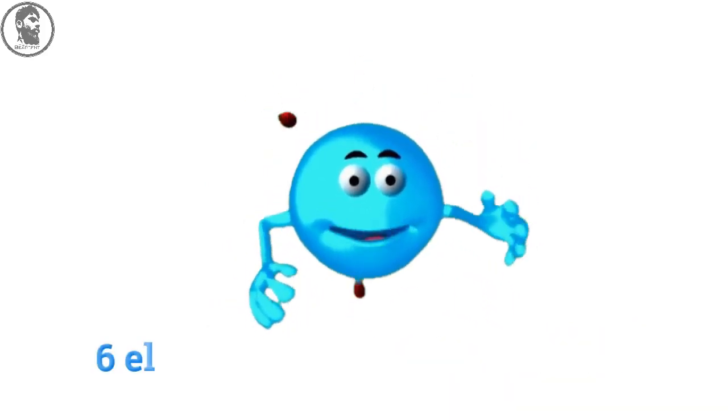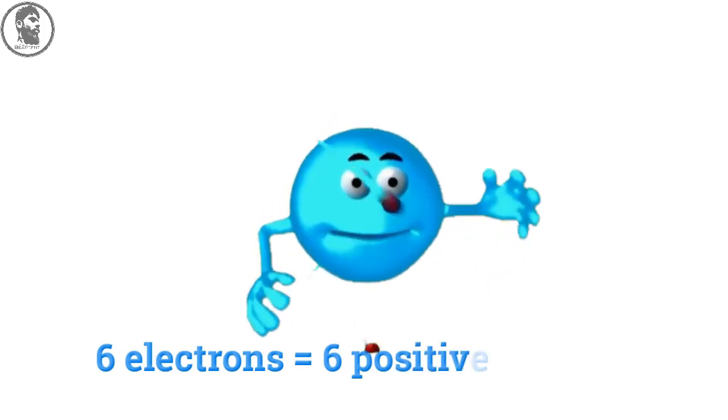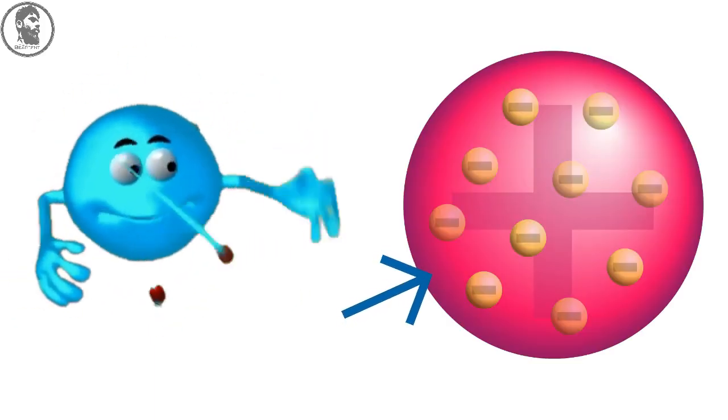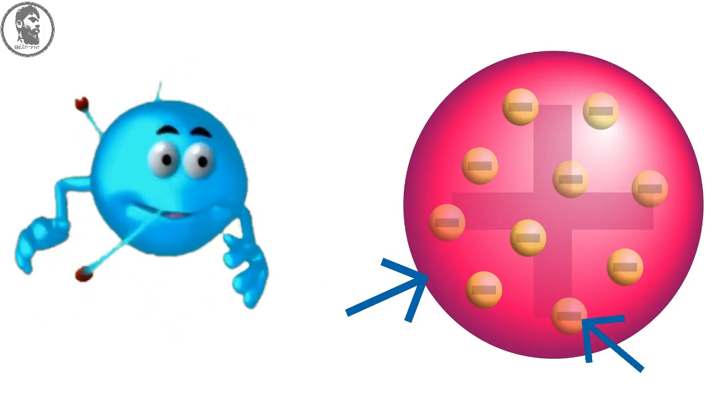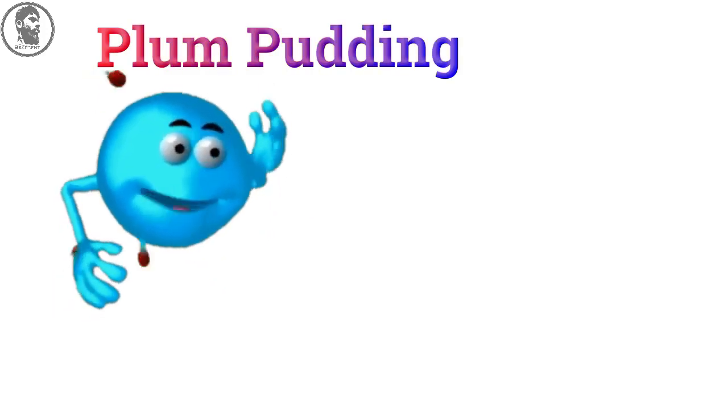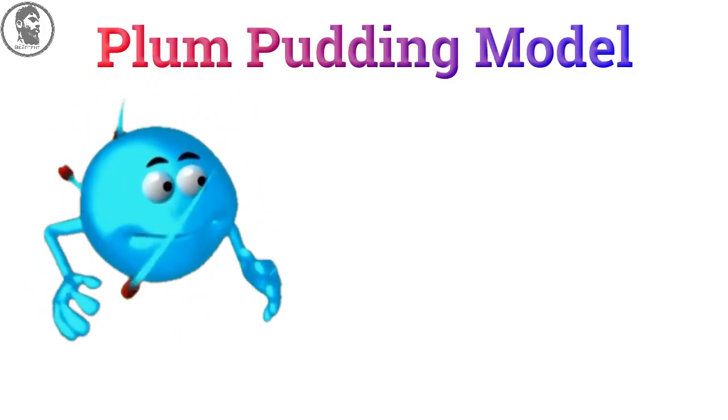If there are six electrons in an atom, there must be six positively charged particles also. To explain this, Thomson proposed an atom is like a sphere of positive charge and electrons are fixed in it. This model is often called plum pudding model of an atom.